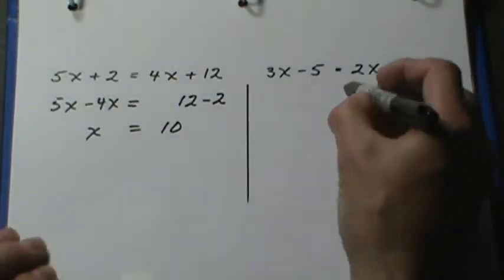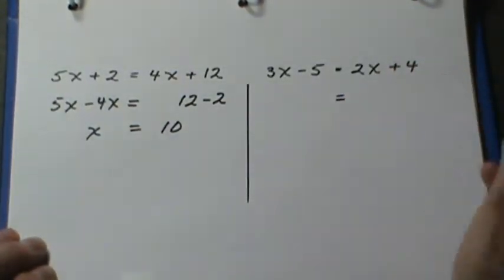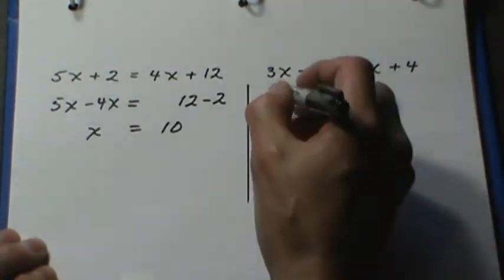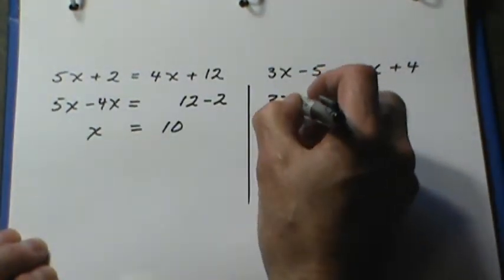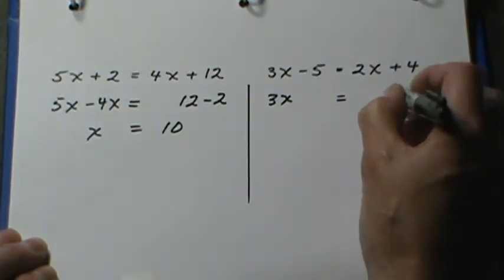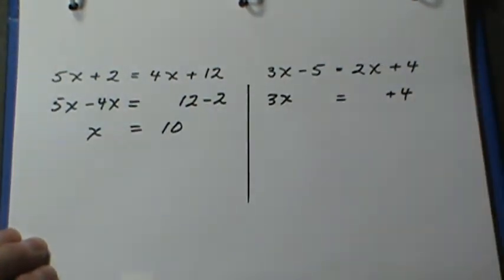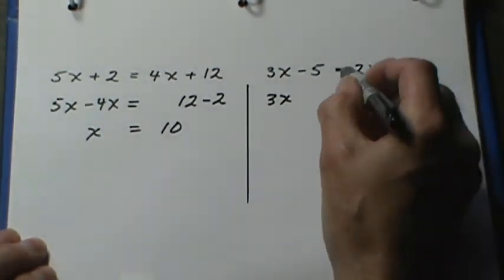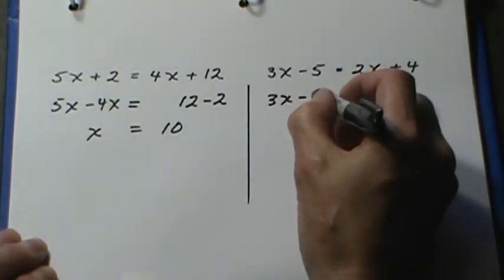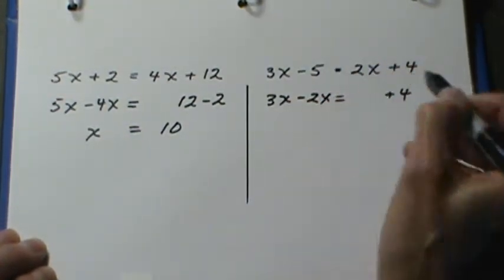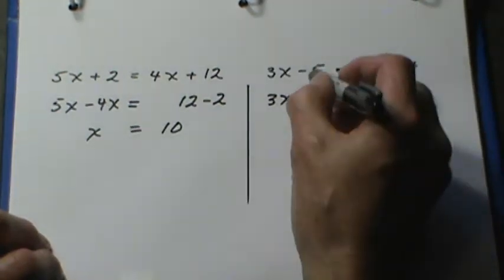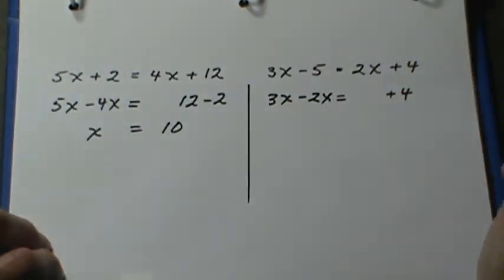Here's another example. I've got x's and pure numbers on both sides. I'm going to leave the 3x on this side and the plus 4 on the right side. I'm going to move the positive 2x, write it as negative 2x or subtract 2x. And bring the minus 5 over to the right side.